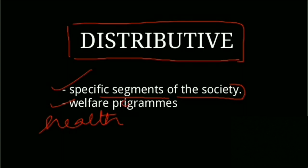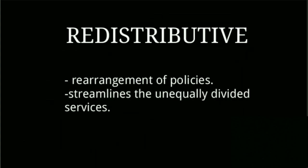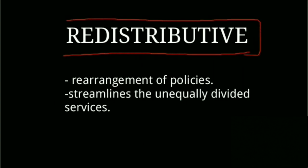Examples of distributive public policies include adult education programs, food relief programs, social insurance programs, and vaccination camps. All these come under the distributive public policies.